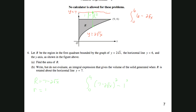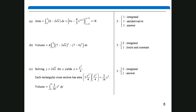Looking at the AP test answer: for part A it's 0 to 9 of 6 minus 2√x, which works out to 18. For part B, large radius is 7 minus 2√x squared, minus small radius, which is 7 minus 6 equals 1, so 1 squared. That gives us the volume of rotation using the washer method.